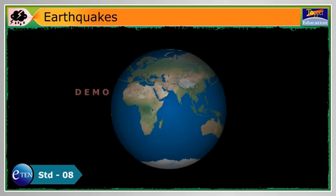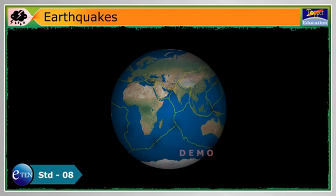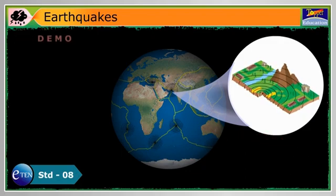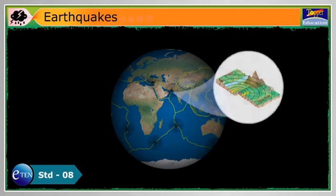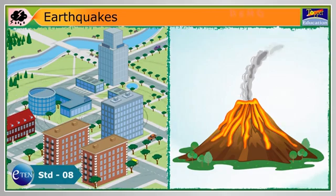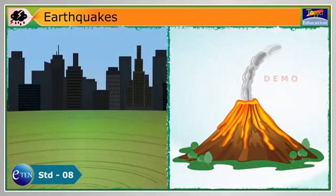The lithosphere is divided into several large and small plates of rocks called tectonic plates. These tectonic plates keep moving and sliding and result in disasters like earthquakes. This movement of plates results in earthquakes, volcanic eruption, mountain formation, etc.